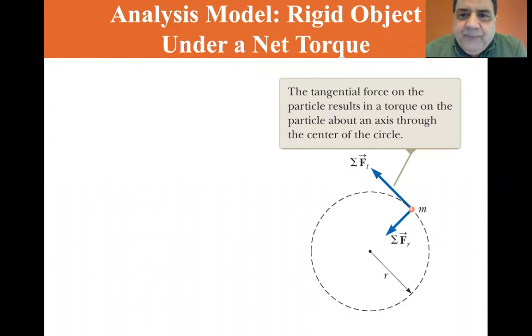And we look at a figure here where there's a force on a small mass m at a radial distance from some center point of rotation. So the tangential force on the particle results in a torque on the particle about an axis through the center of the circle.